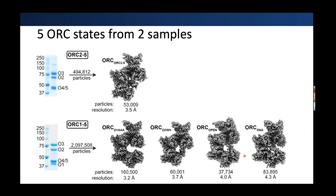What we found from this dataset were four different conformations — somewhat surprising, considering that chemically we see a pretty homogeneous sample. In total, we had two samples: ORC without ORC1, and ORC with ORC1. One thing to note: ORC2 through 5 is a very stable complex and no other conformations were seen in that dataset. But once ORC1 is present, the complex really opens up to breathe and generates all these conformations.